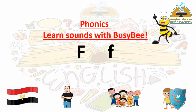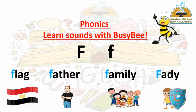Alam — علم. Spell with me: flag. Flag. Alam. What can you see? Father. What's the meaning of father? Ab — أب. Father. Ab. Spell with me: father.